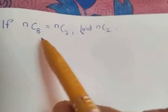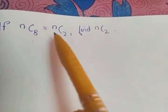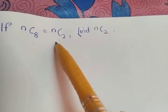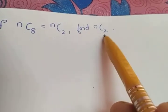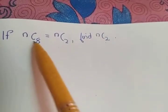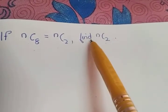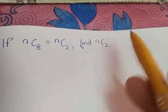The first question of exercise 7.4: if NC8 is equal to NC2, find NC2. The given condition is NC8 equal to NC2, and we have to find NC2.